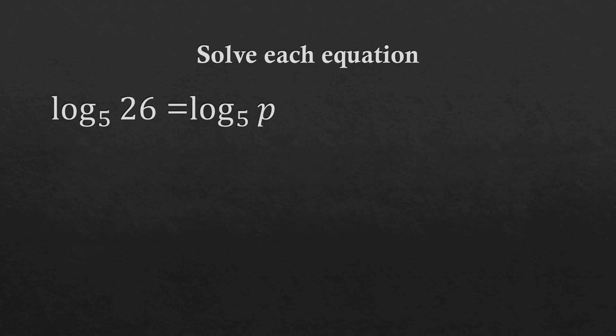Let us now solve log of 26 to the base 5 equal to log of p to the base 5. Notice that we have the same base on both sides, and we have a single logarithm on each side. So if this is the case, we simply equate the arguments. We get 26 equal to p, or p is equal to 26.